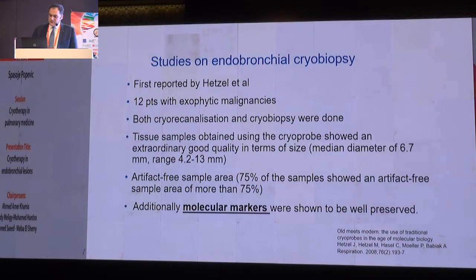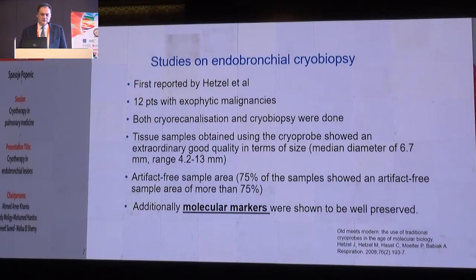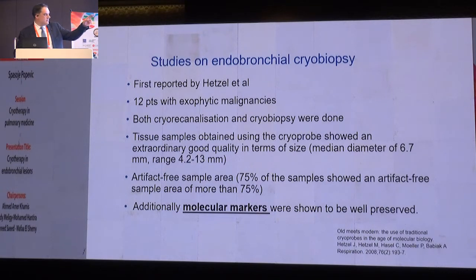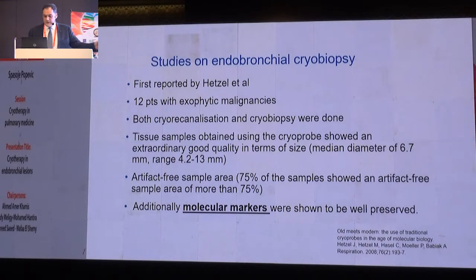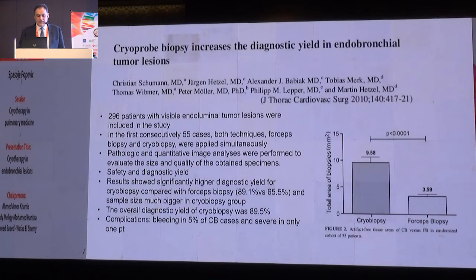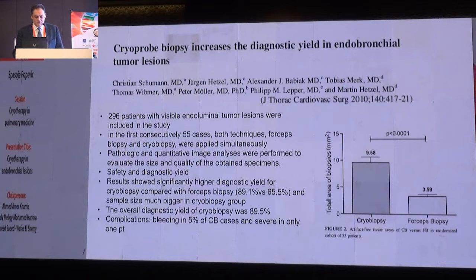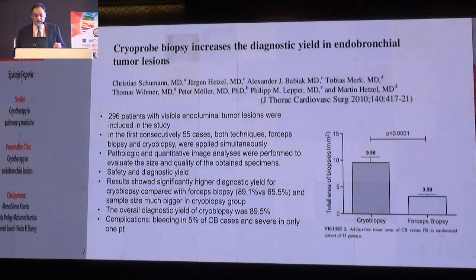Studies on endobronchial cryobiopsy started in 2008. The first study described that the tissue is good for molecular analysis — the artifact-free sample area was very good, and tissue samples were of high quality and high volume. Both cryorecanalization and cryobiopsy were done, encouraging other authors to do more. A 2010 study with around 300 patients with visible endobronchial tumors repeated the success, showing significantly higher diagnostic yield for cryobiopsy compared with forceps, and much bigger sample size.